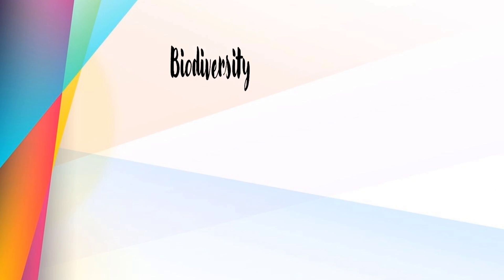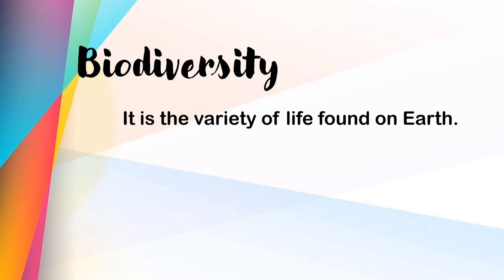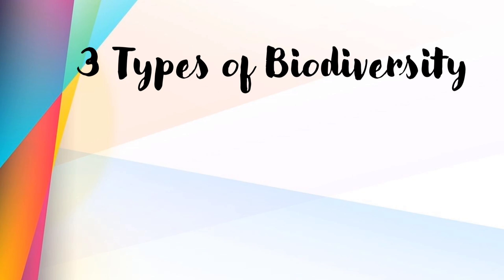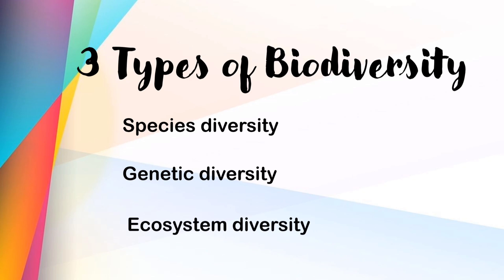Let's start with the definition of biodiversity. Biodiversity is the variety of life found on Earth. It also refers to every living thing including plants, bacteria, animals, and humans. However, even if the Earth is rich in biodiversity, there are still a lot of species that are on the brink of extinction due to human activity. Now, there are three types of biodiversity: species diversity, genetic diversity, and ecosystem diversity.